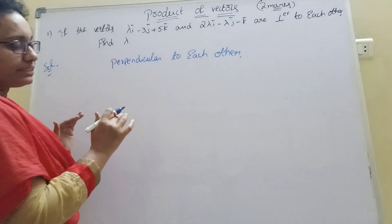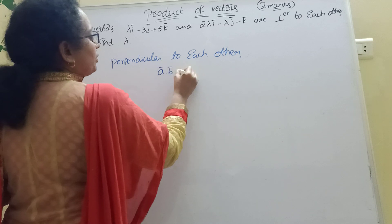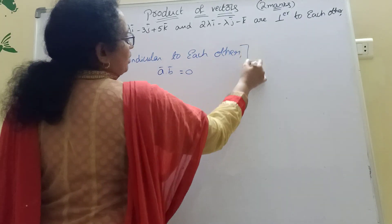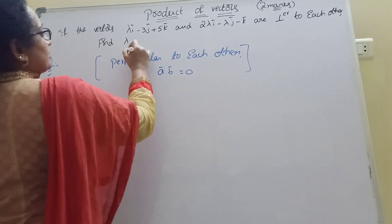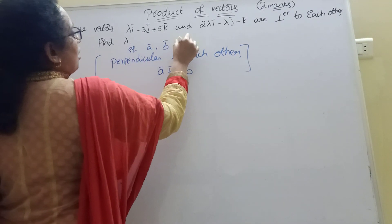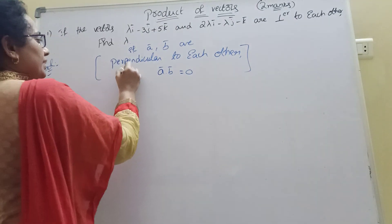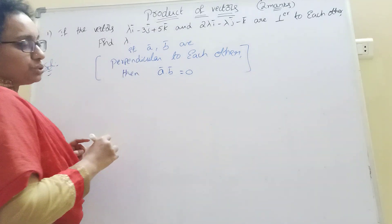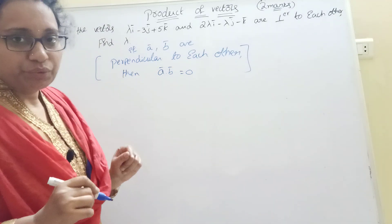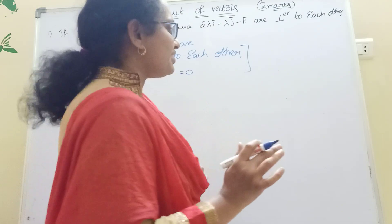Since the vectors are perpendicular to each other, the formula is: A bar dot B bar equal to 0. This is the condition for perpendicular vectors. We use the dot product here.